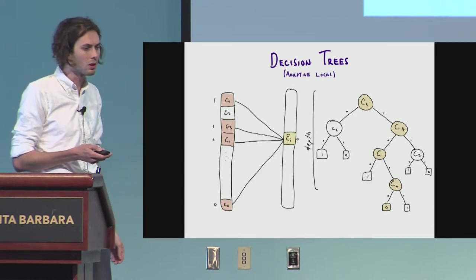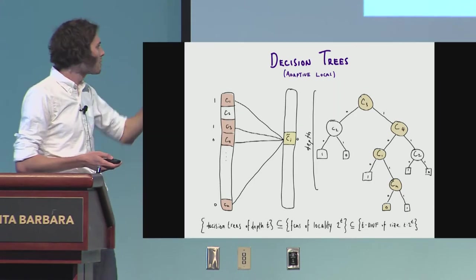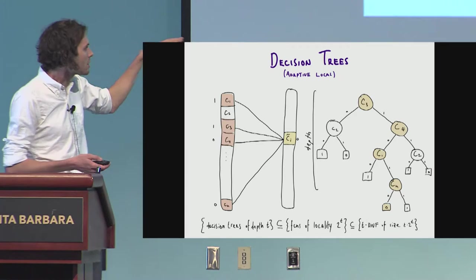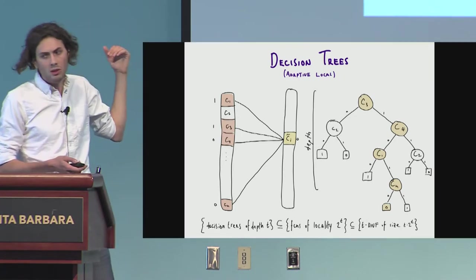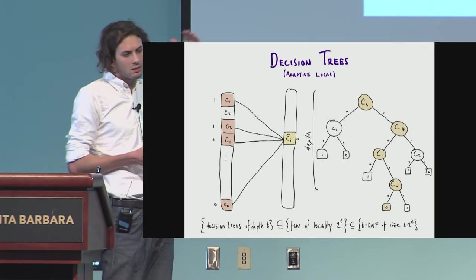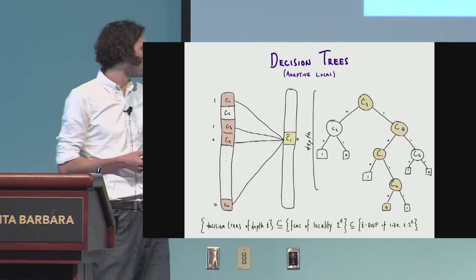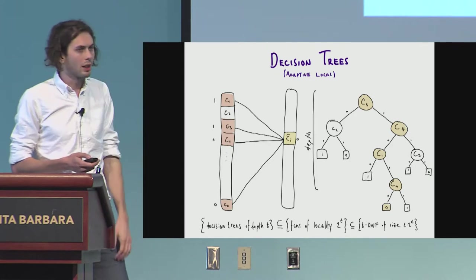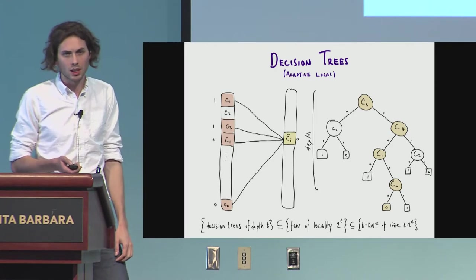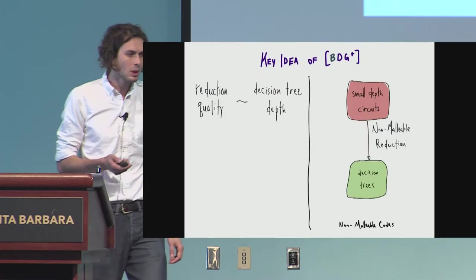The depth is the length of the longest path. And if you think about it for a minute, it's easy to notice that the decision trees of depth d have locality 2 to the d. And also can be encoded by d DNFs of size exponential d.